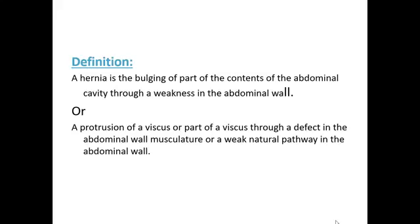A hernia is a bulging of part of the contents of the abdominal cavity through a weakness in the abdominal wall. It may also be defined as a protrusion of a viscus or part of a viscus through a defect in the abdominal wall musculature or a weak natural pathway in the abdominal wall.